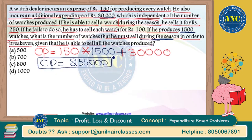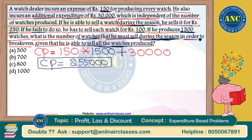Total cost price works out to 2,55,000 rupees — that is the total investment. During the season, watches sell at 250 rupees; outside the season, at 100 rupees. Total 1500 watches produced will all be sold. The question is: how many must be sold during the season to break even?